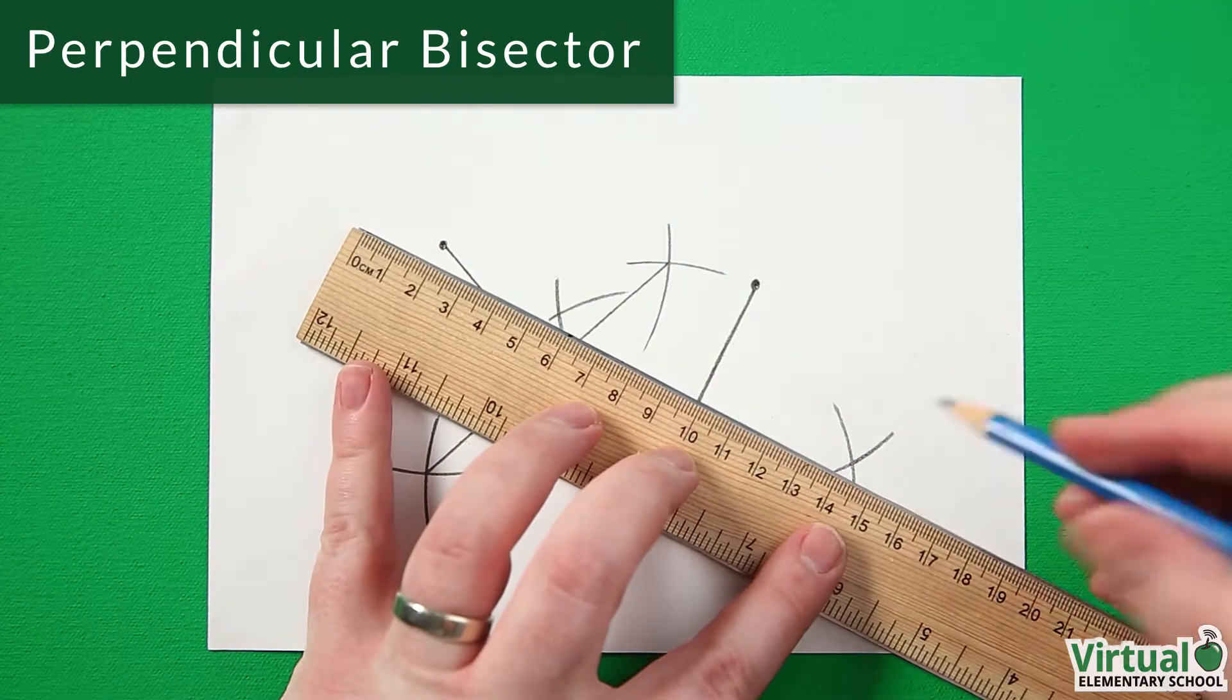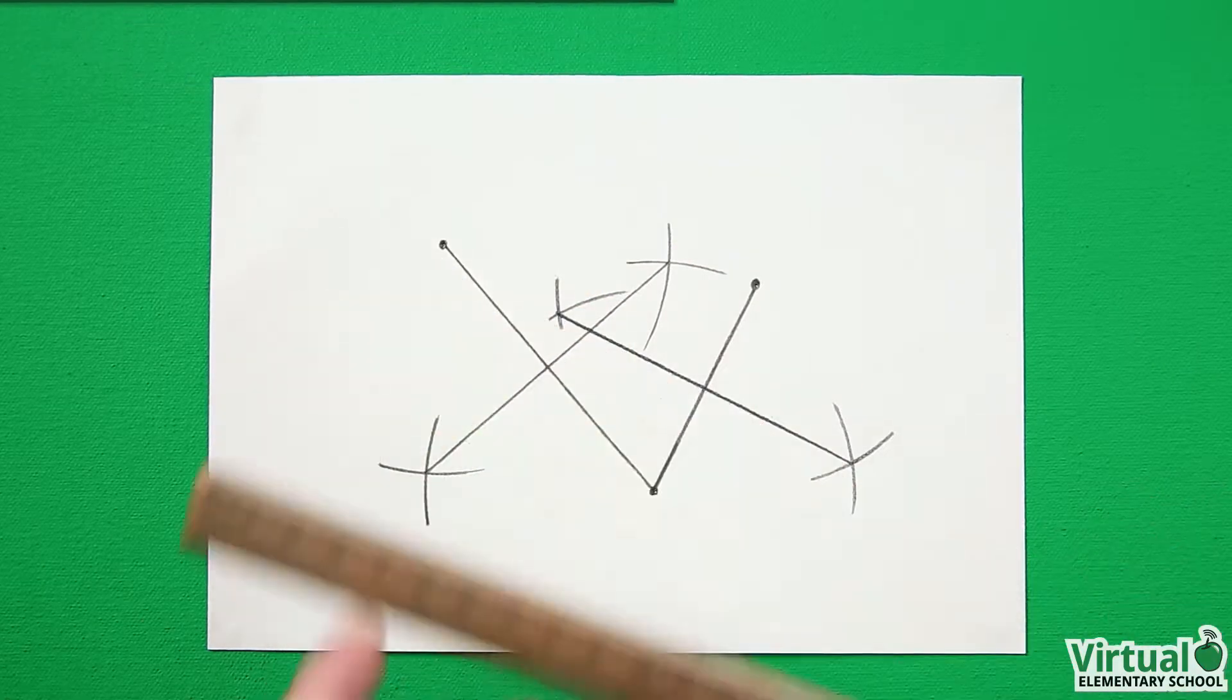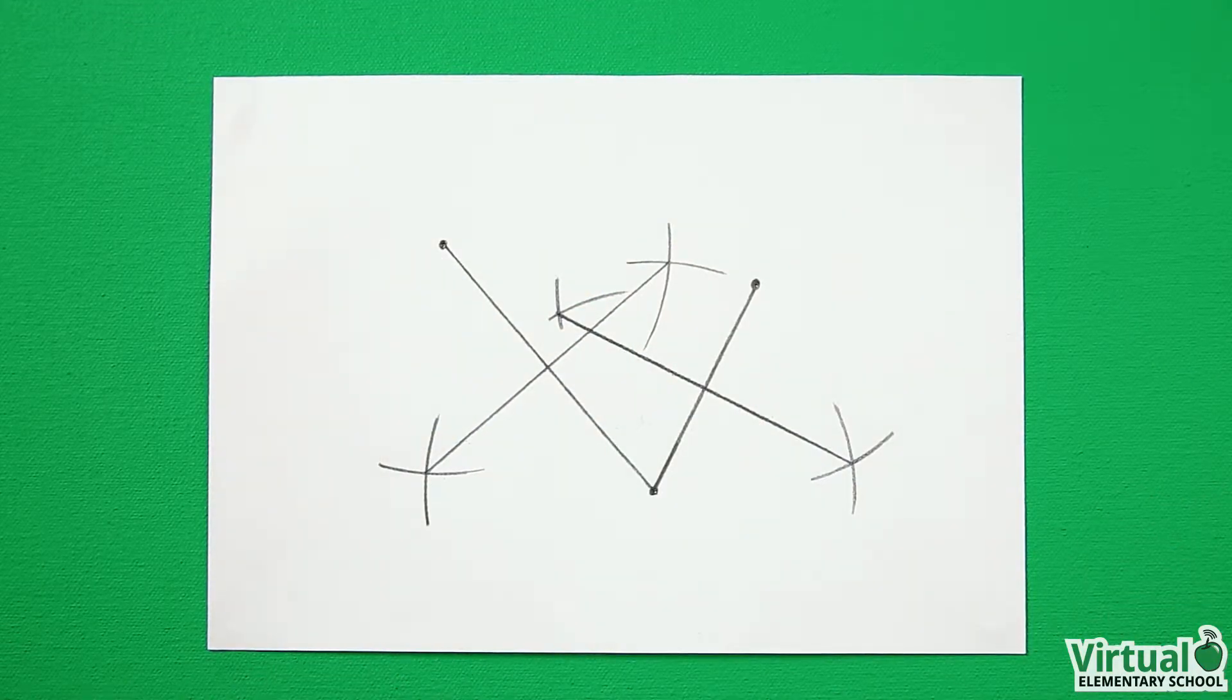We make sure the two perpendicular bisectors intersect. This intersection is the center of the circle.